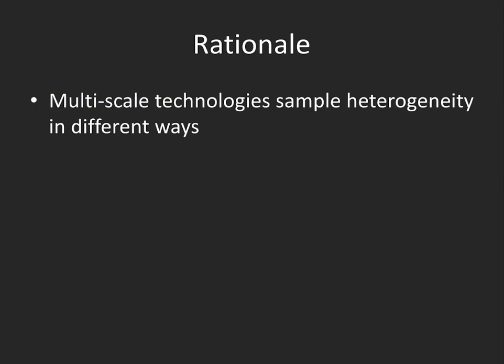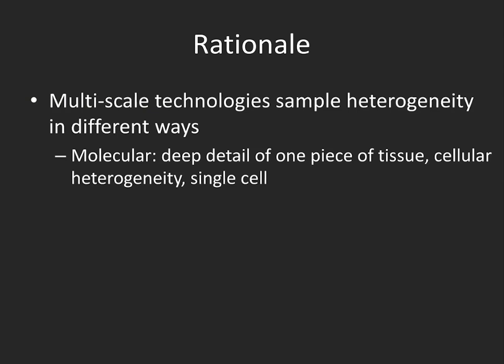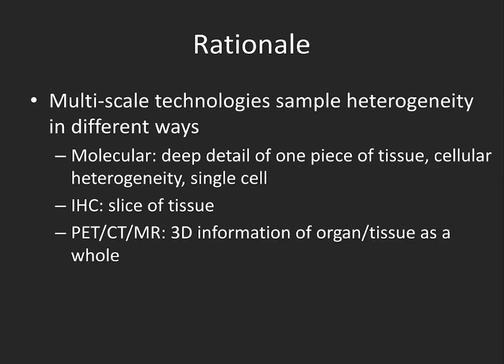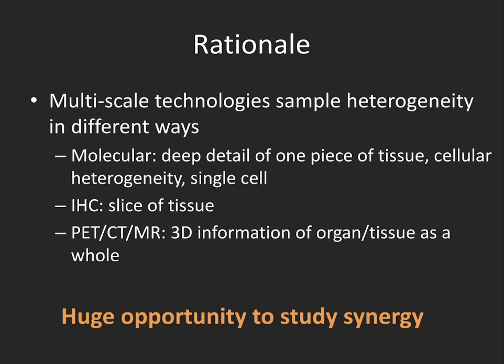So what is the rationale for integrating multi-scale technologies and the data that result from them? One reason is that they sample heterogeneity of diseases in different ways. With molecular data, we get very deep detail of one sample or piece of tissue, even at the single-cell level. With immunohistochemistry or digital pathology, we get detail of the cells and composition of a tissue slice. With radiographic images, we get lower-resolution but 3D information of a whole organ, or in oncology, a tumor as a whole. There is a huge opportunity to study synergy, and the expectation is that combining all these data types could compensate for potential heterogeneity in these diseases.